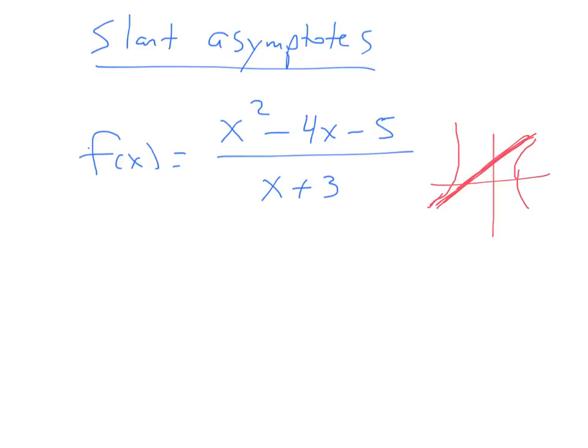So it's going to feel a little bit like old-school division. We take the bottom, x plus 3, and we divide it into the top, x squared minus 4x minus 5. You start by asking yourself, what do you multiply x by to get x squared? That would be an x times an x that gives us x squared. Then we do that multiplication. We take x times x and get x squared, and we do x times 3 and get 3x.